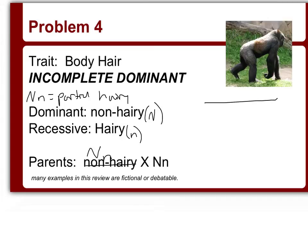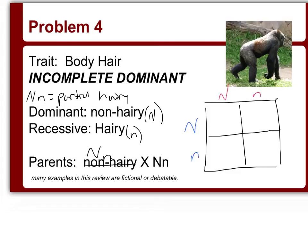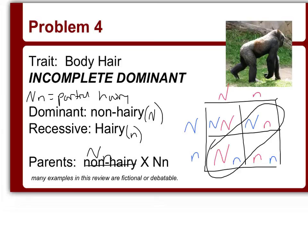Setting up the Punnett square using red for Parent 1 and blue for Parent 2, we fill it out — always putting the capital letter first. Looking at the genotype frequencies, I have one-fourth that are homozygous dominant (NN), one-fourth that are homozygous recessive (nn), and two-fourths — or half — that are heterozygous (Nn).